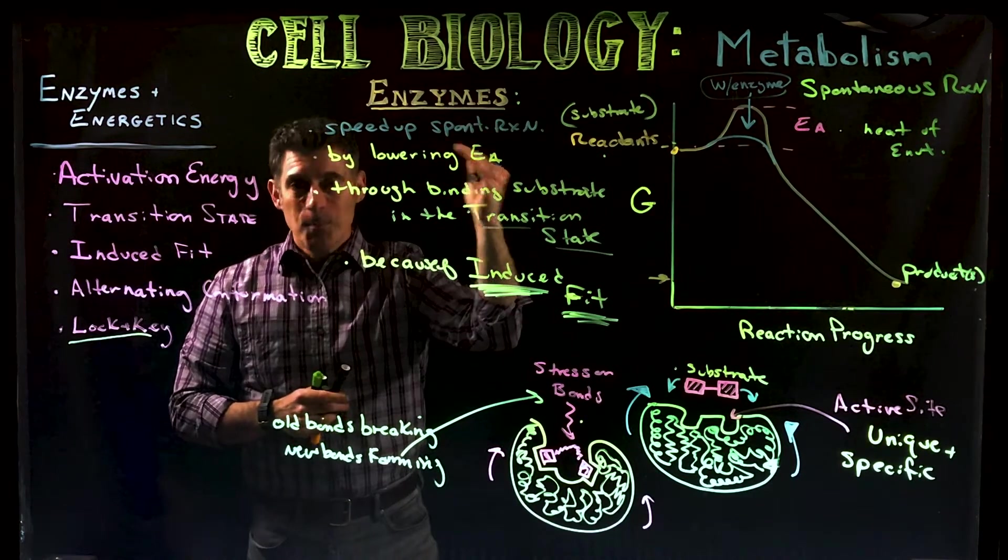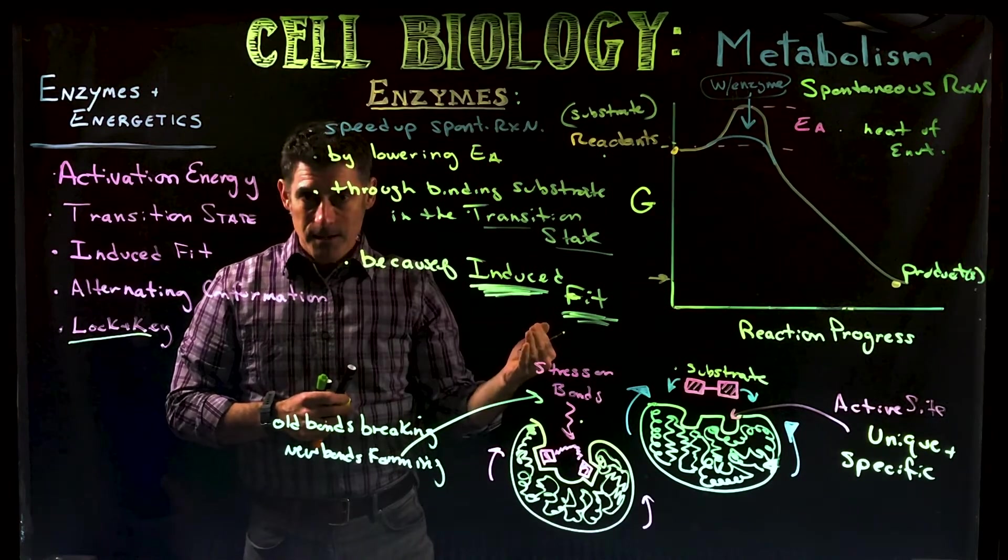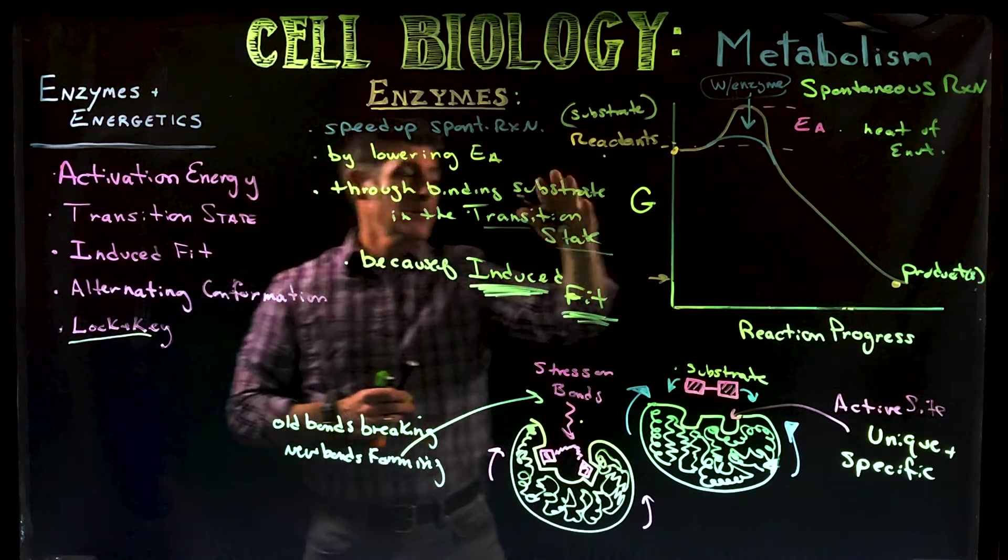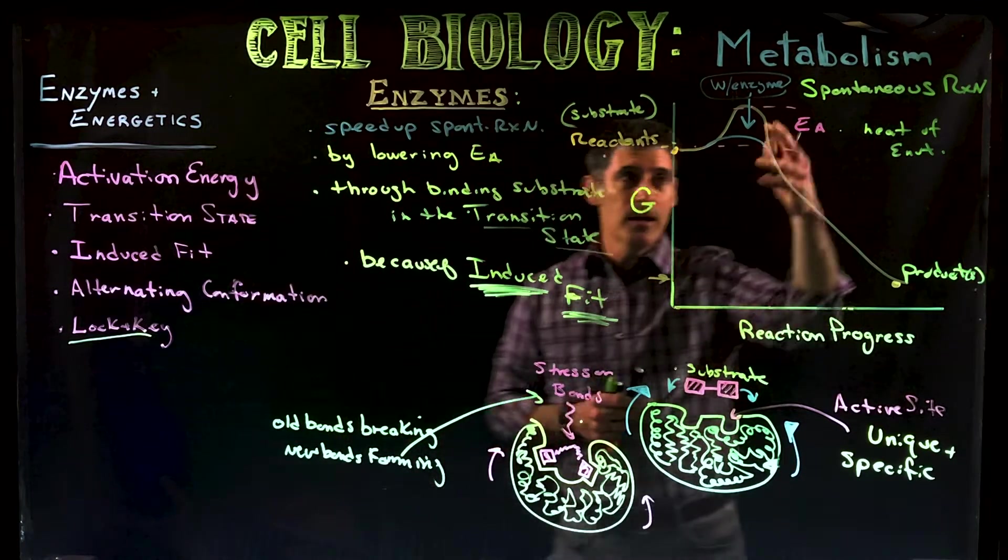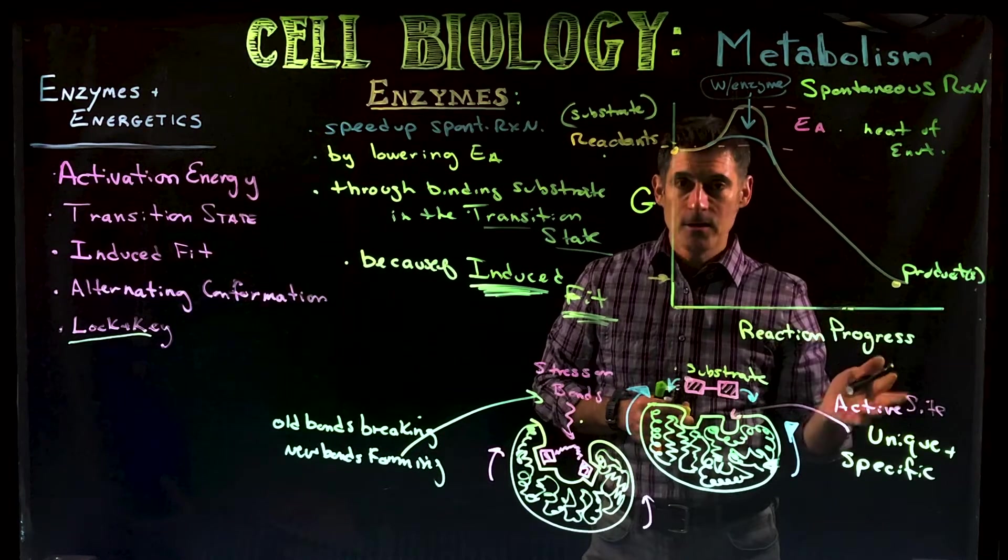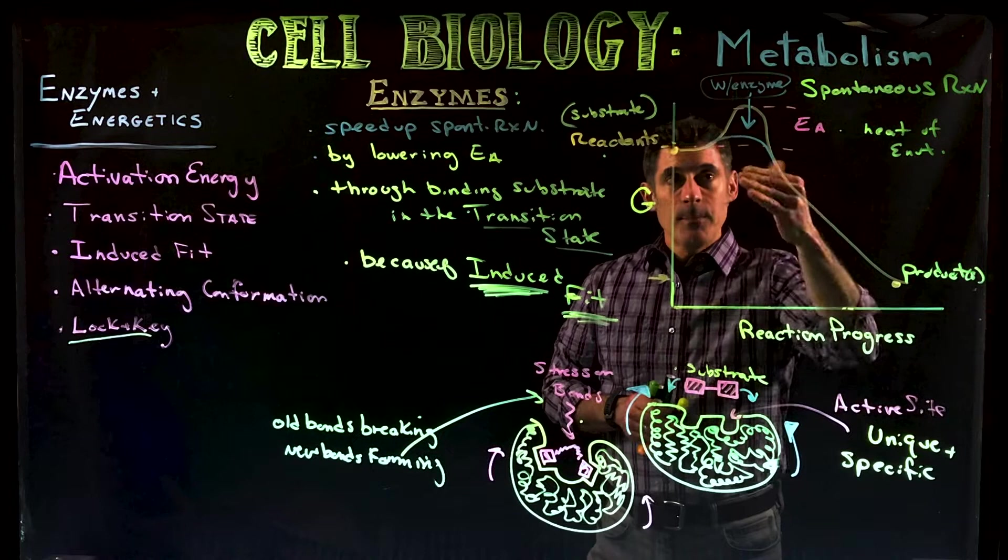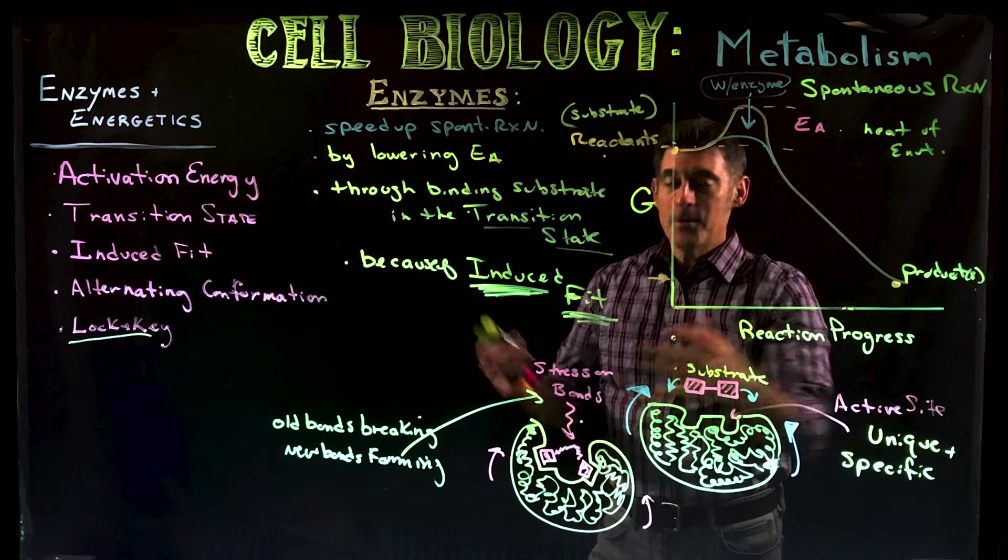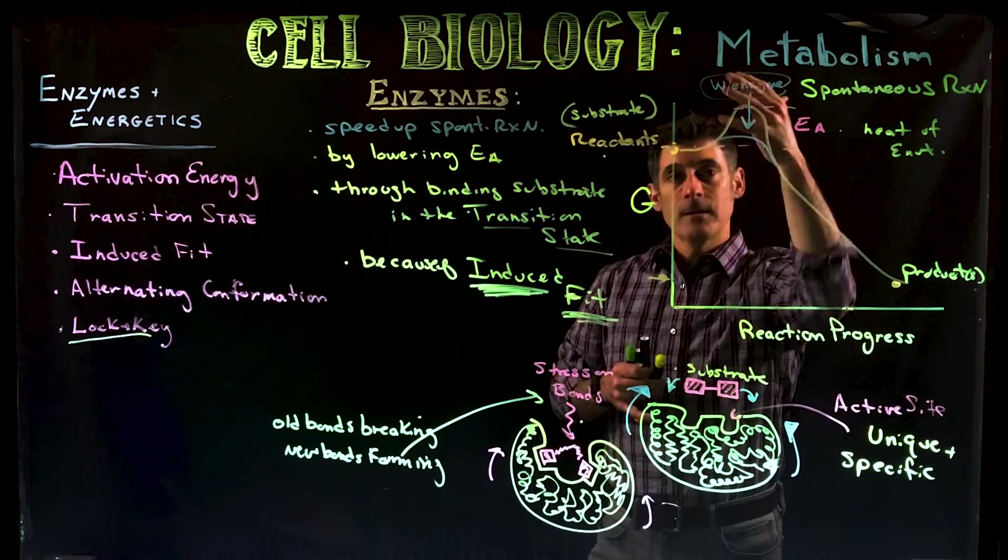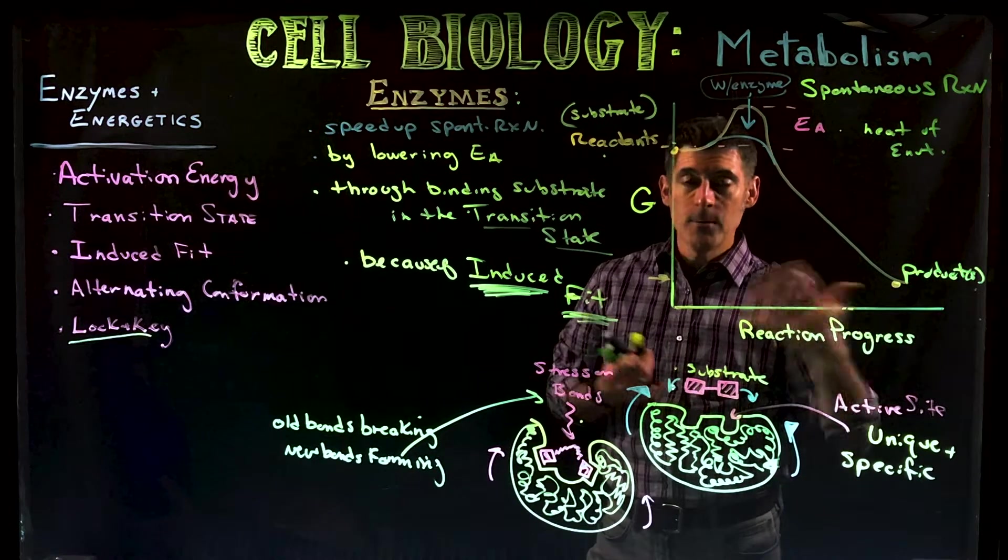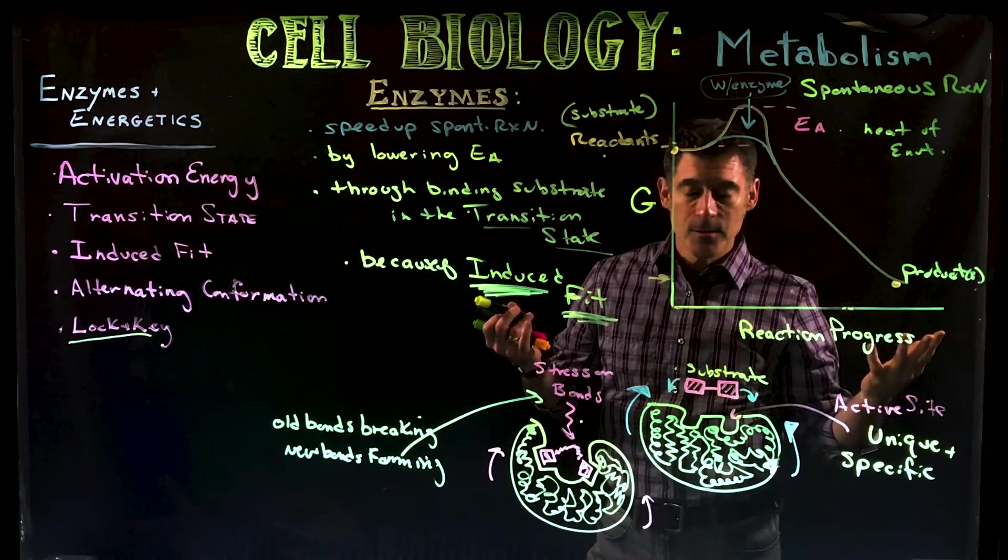So enzymes speed up spontaneous reactions, reactions that can happen on their own. They could, if there's enough heat in the environment, they could overcome this and then just occur. But usually that won't happen. What an enzyme will do is then bind to the substrate under stress, lowering the amount of energy required to move it forward, and so the reaction just moves forward on its own.